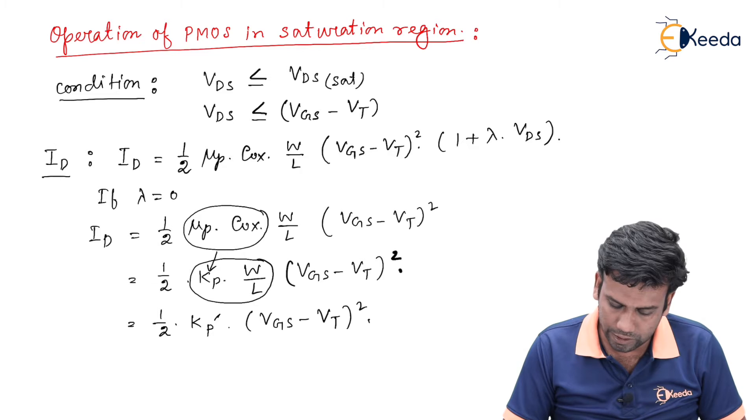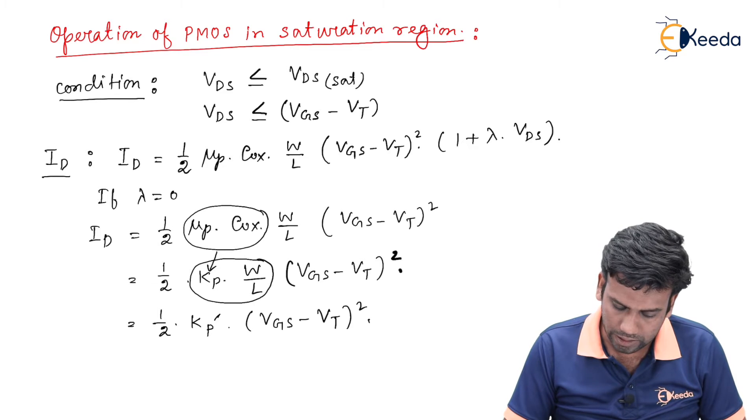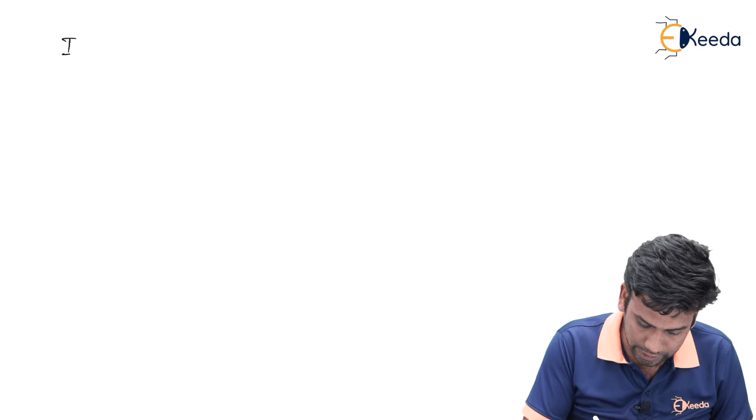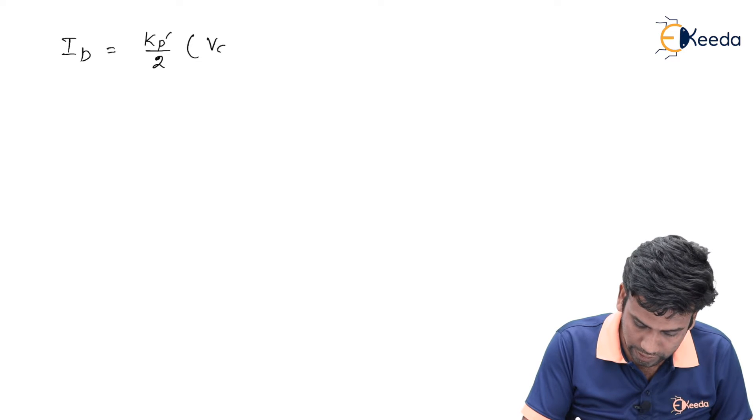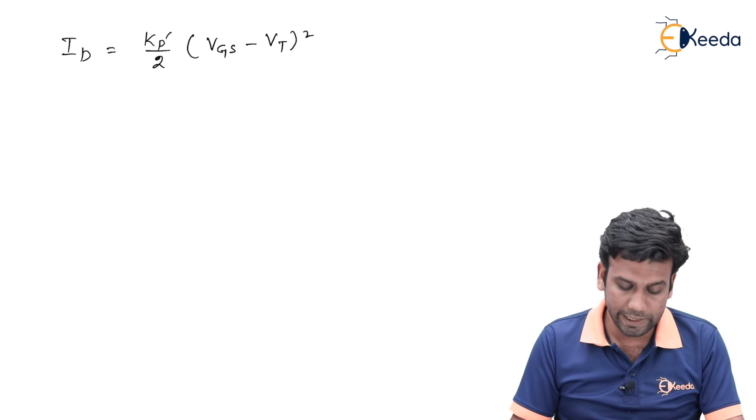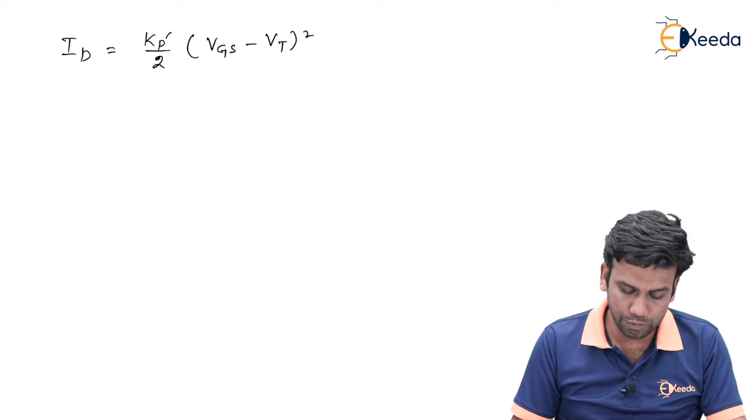The final equation is ID equals K_P' divided by 2 into (VGS minus VT)². From this final equation for the saturation region,